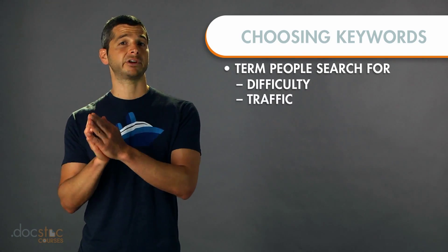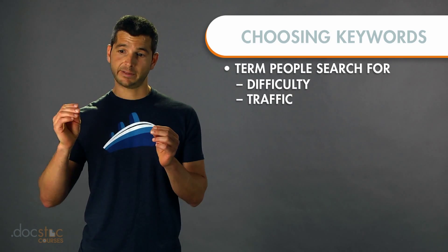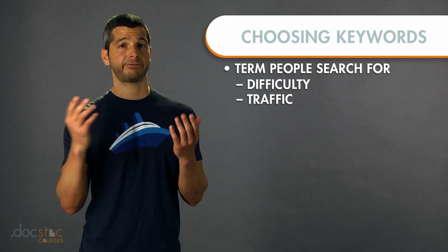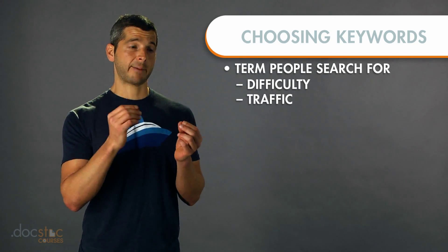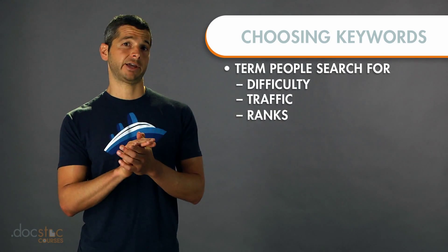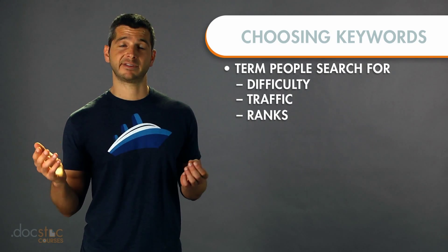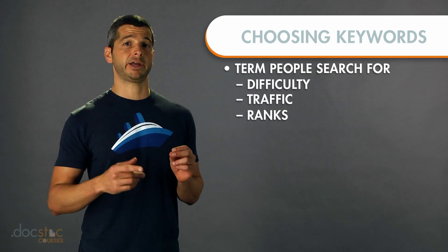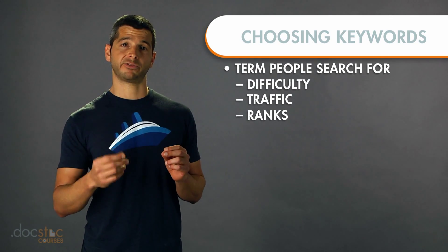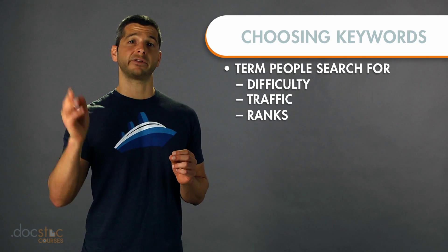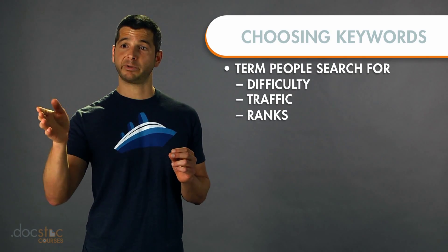Then there's traffic, which shows the search volume — the amount of people looking for apps based on this keyword. And then finally there's rank. If you have an existing app in the App Store, you can see how you rank in the list of results based on this keyword. Somebody inputs this keyword — where on the list are you? Are you number three? That's your ranking.